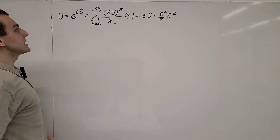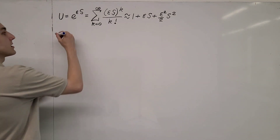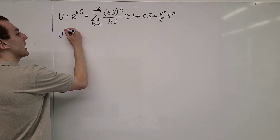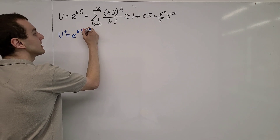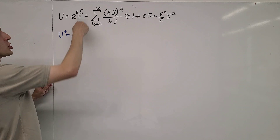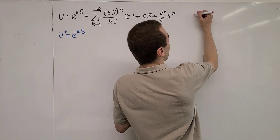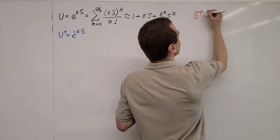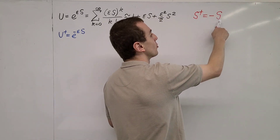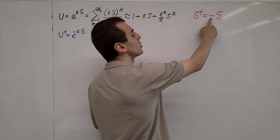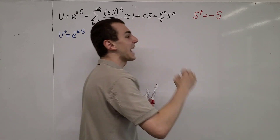Now let's take the Hermitian adjoint of this unitary operator. U dagger is going to be equal to e to the minus epsilon S. That's because we're choosing S to be anti-Hermitian. I'll write that property up here: S dagger is equal to minus S. This property is called being anti-Hermitian. If it were Hermitian, this minus sign would not be here — we would have S equals S dagger. But this minus sign makes it anti-Hermitian.